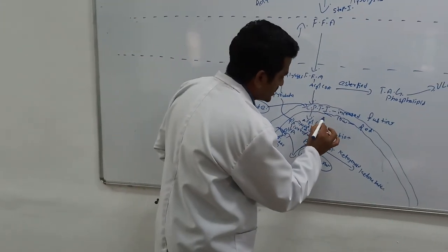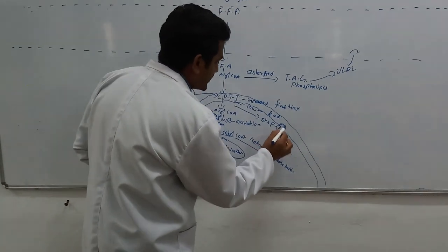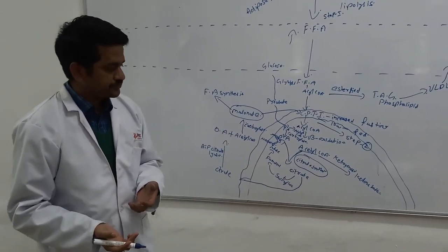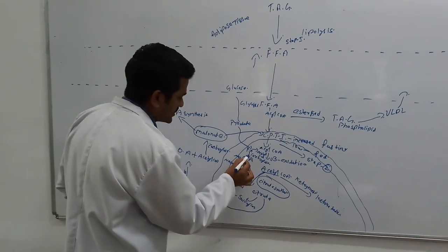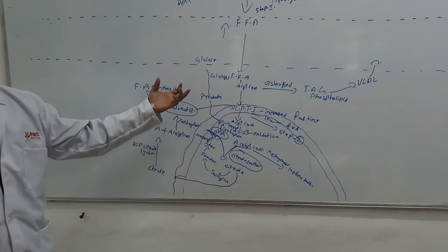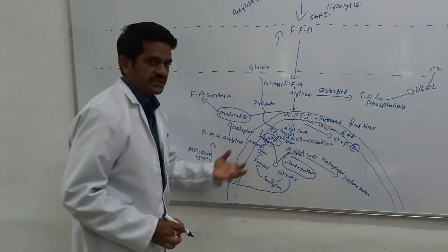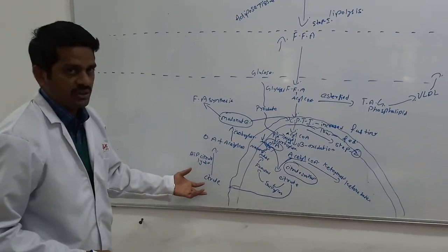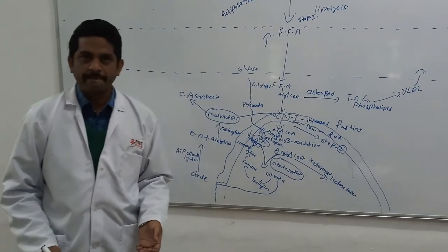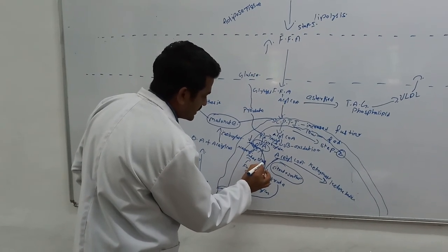That is another step in which malonyl-CoA plays a very important role. The second crucial step is CPT-1 — carnitine palmitoyltransferase-1 — in the fed state and the fasting state. The third step is the availability of oxaloacetate. Oxaloacetate can be formed from the glucose molecule. If oxaloacetate is very low, the citric acid cycle does not continue, and that leads acetyl-CoA to go into ketogenesis.